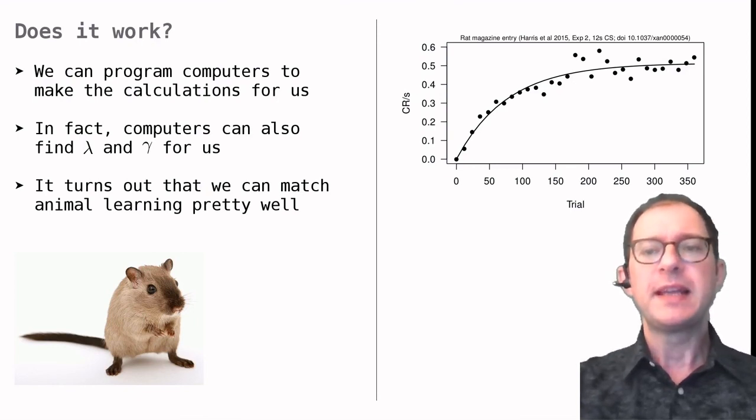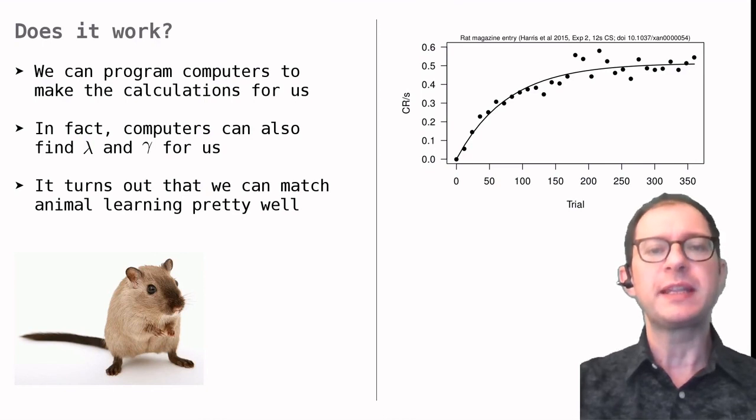When I say best fit, I mean that I have programmed my laptop to find the values of lambda and gamma that make the RW prediction as close as possible to the real data. This is something that computers can do easily, saves us a lot of time, and enables us to validate or evaluate the model.